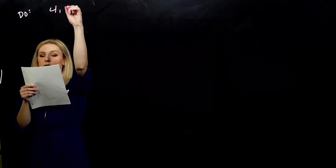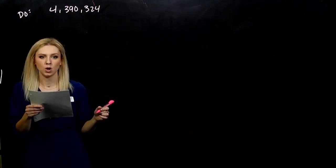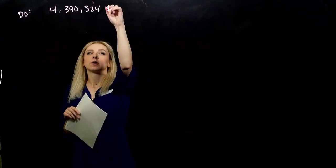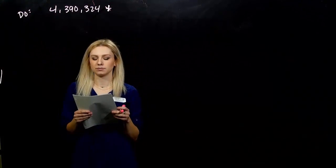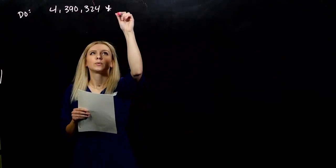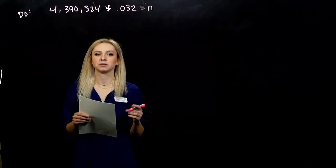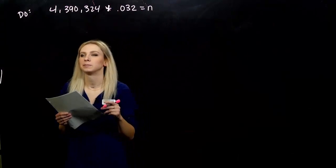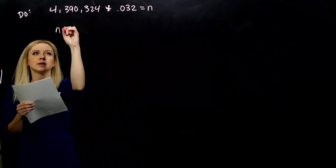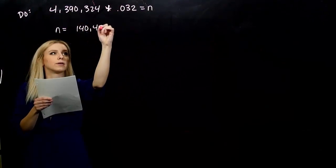So, number of boxes. First example, 4,390,324 boxes were sold. And we're looking for 3.2% of that number. So as a decimal, what are we looking at? 0.032 equals some number n. We're trying to figure out that amount. So if we do the multiplication, I'll just tell you what it is.